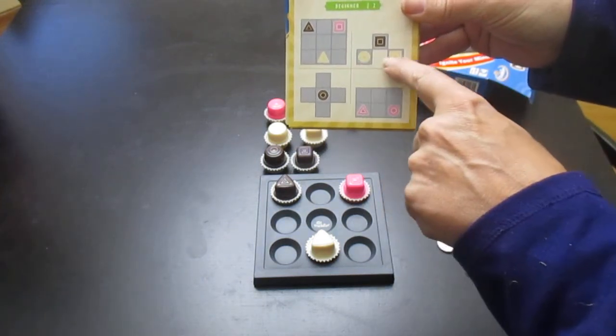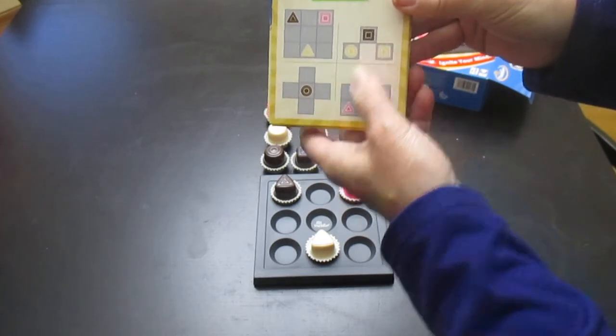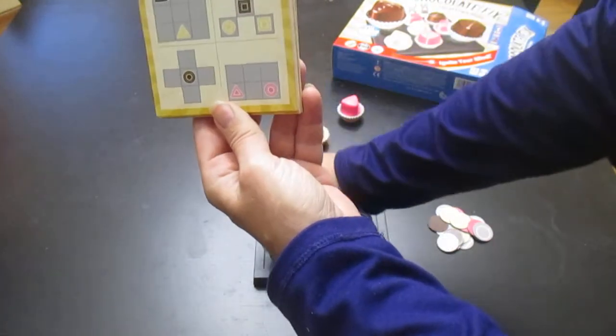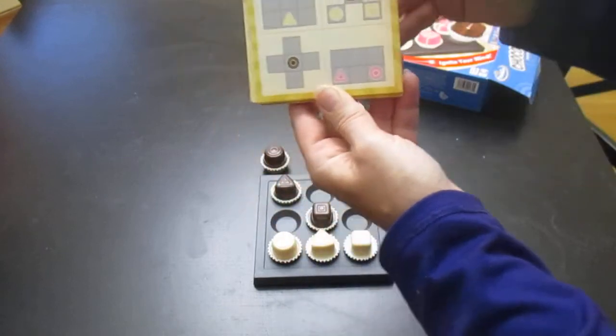The next thing we have to do is we look at this hint and it says, okay, I have a circle, a square, and a chocolate. So I place my circle, my square, and my chocolate square on my board.